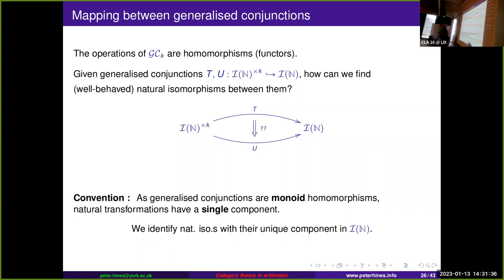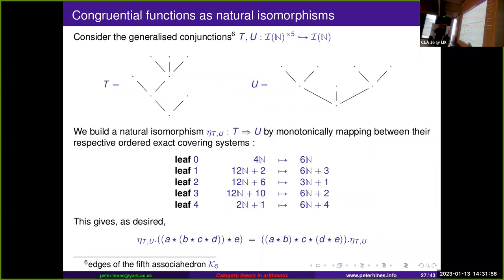As category theorists we call homomorphisms functors, so as soon as we consider homomorphisms we should start considering natural transformations between them. If we're given two trees, how can we write down the natural isomorphism between them? Both trees determine a distinct ordered covering system given by taking the leaf addresses of the trees. We get a monotone bijection from one to the other, and taking the union of all these monotone bijections gives a bijection on the natural numbers.